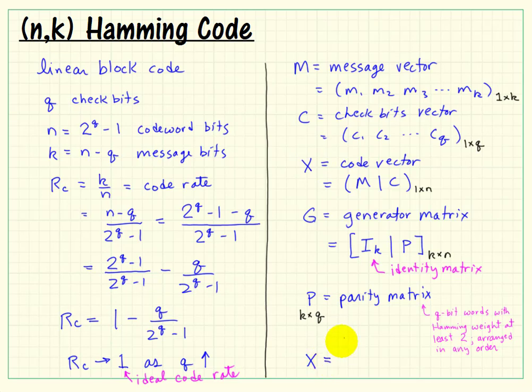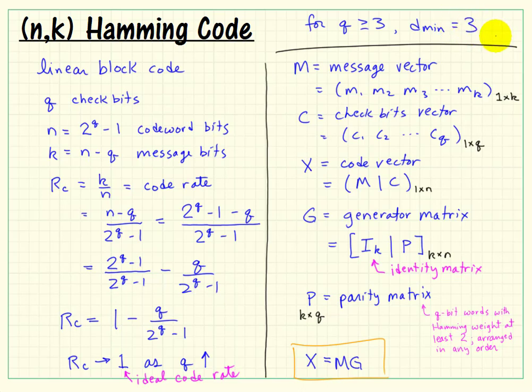The code vector is calculated very simply as the message vector times the generator matrix. We're doing a matrix multiplication to form our code vector. For Q, the number of check bits greater than or equal to 3, the minimum Hamming distance is always 3 no matter what. It's possible to improve the code rate arbitrarily, but the error control capabilities are always fixed.